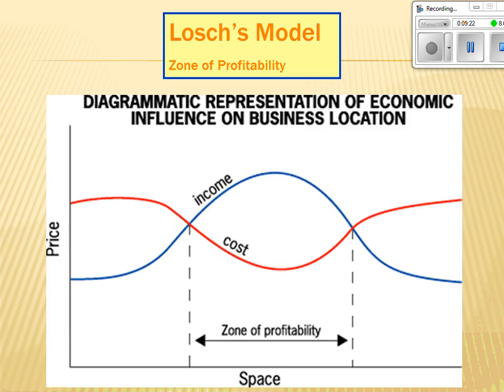This is the model for Loesch. The zone of profitability can be found between where your income is going to be the highest and where your cost is going to be the lowest. That's where you want to locate your industry.